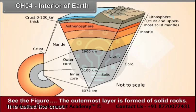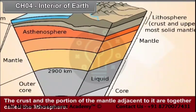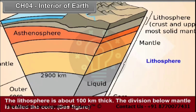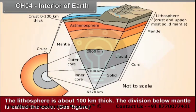The outermost layer is formed of solid rocks. It is called the crust. The division below the crust is called the mantle. The crust and a portion of the mantle adjacent to it are together called the lithosphere. The lithosphere is about 100 kilometers thick. The division below the mantle is called the core.